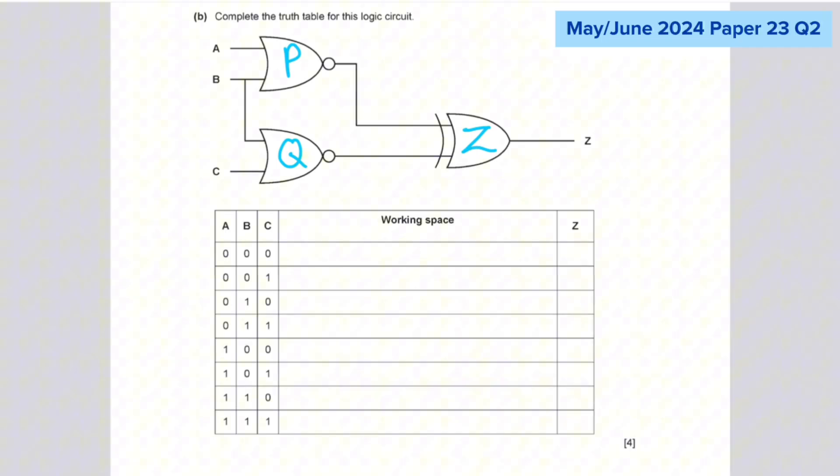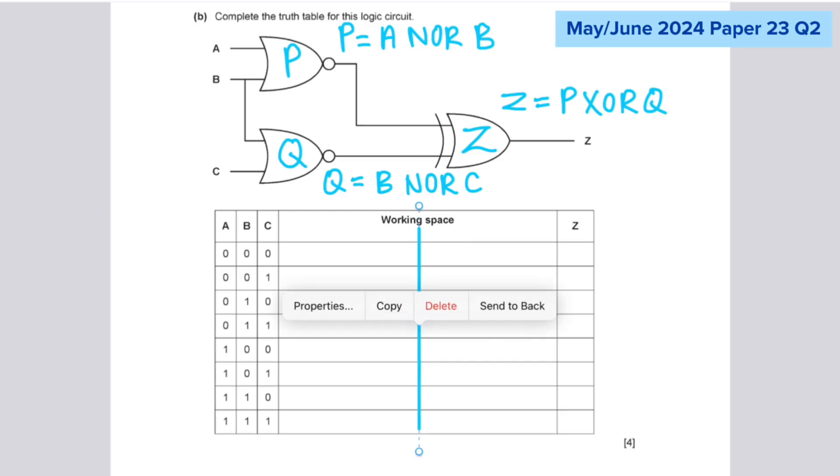Then you have to identify what is the function of each of these gates. So basically we're just breaking the circuit down. So P is A NOR B. Q is B NOR C. And Z is P XOR Q. So I'll just divide the working space like this. One section for P, one section for Q. And then Z is the output.